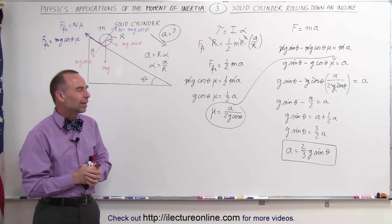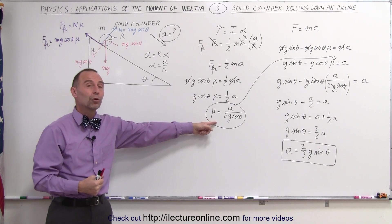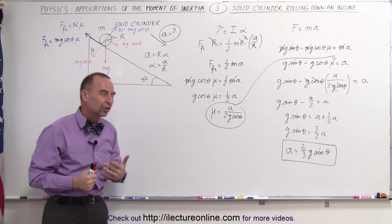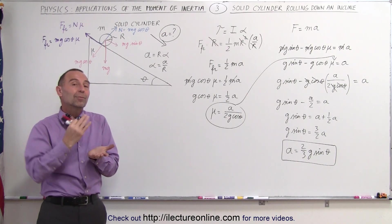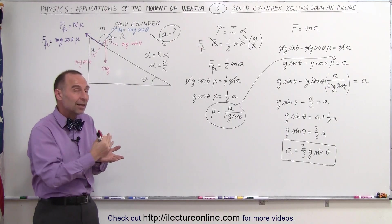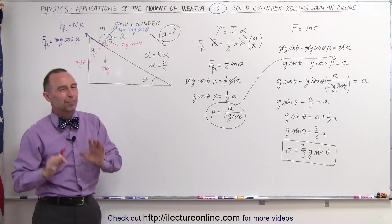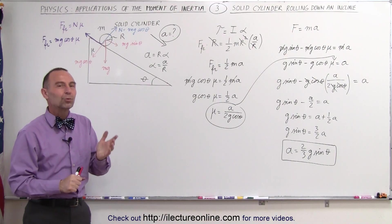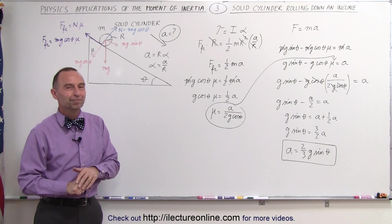Later on we'll do an example where there's a limit to how much friction force the coefficient of friction can produce, so there will be a limit to how steep the incline can be before the object stops rolling and actually begins to slip. But that's for another problem coming later in the series.